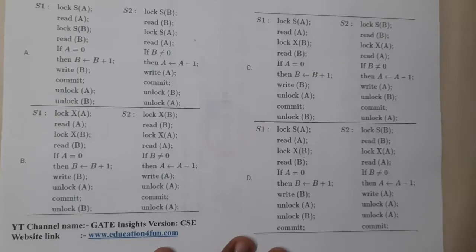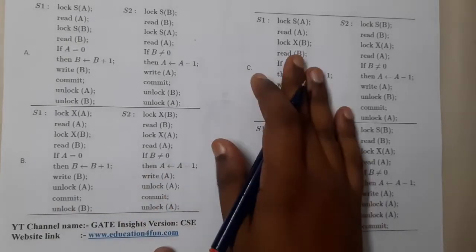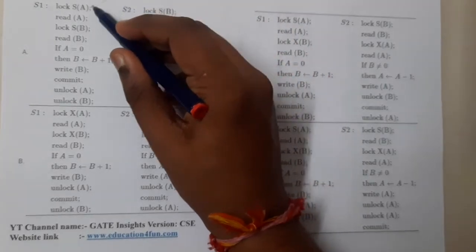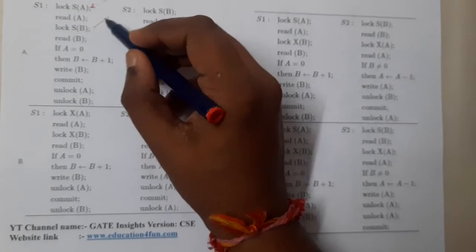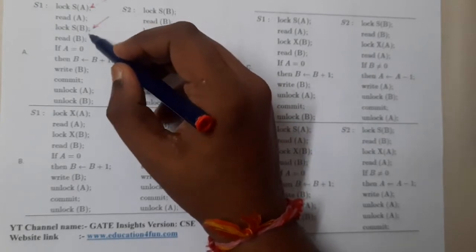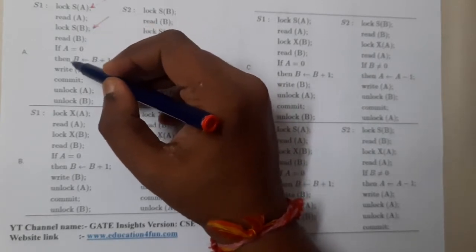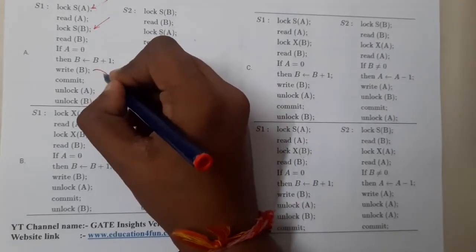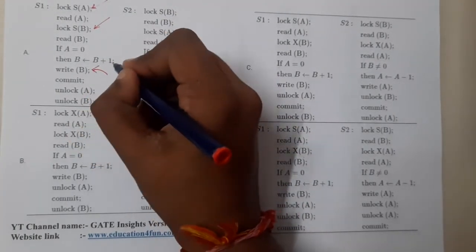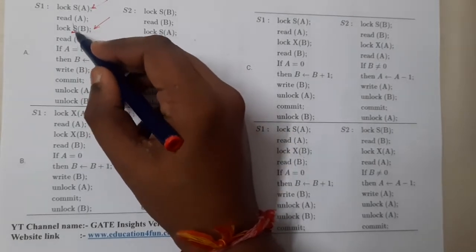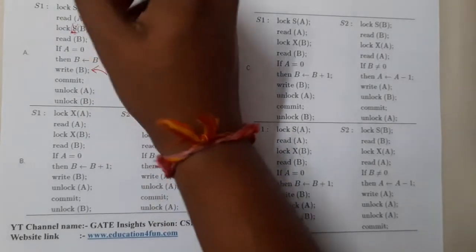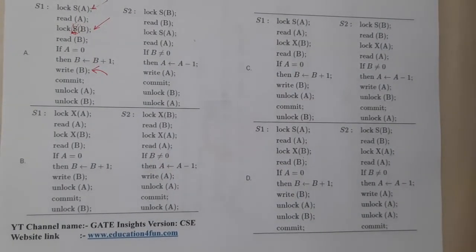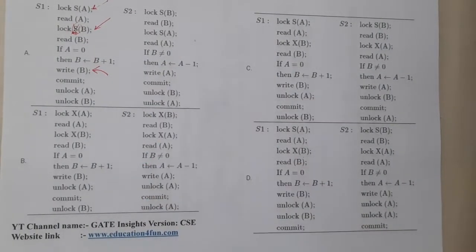Let us start checking with option A. In option A we locked shared lock with A, then we done shared lock with B, we read it both times. If A equals zero then we wrote B. I found a huge issue. If you are going to write something, what lock should we use? We should load exclusive lock but here I used shared lock. So I can conclude that S1 is having some issue. There is no need to check S2.